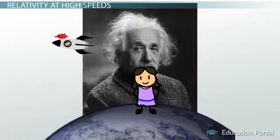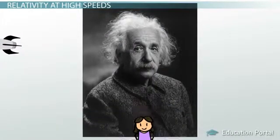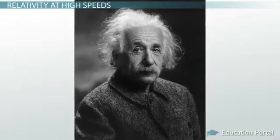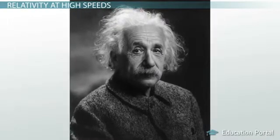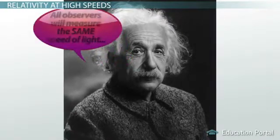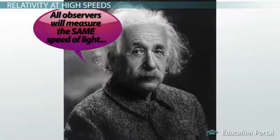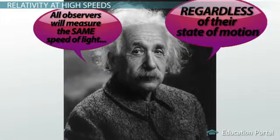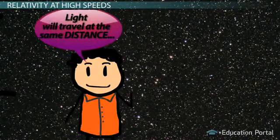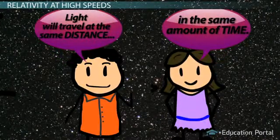Speed is a measure of distance traveled over time. You know, this is true for light as well as it is for any other object in motion. Since light follows the laws of physics, Einstein postulated that all observers will measure the same speed of light regardless of their state of motion. In other words, light will travel at the same distance in the same amount of time.